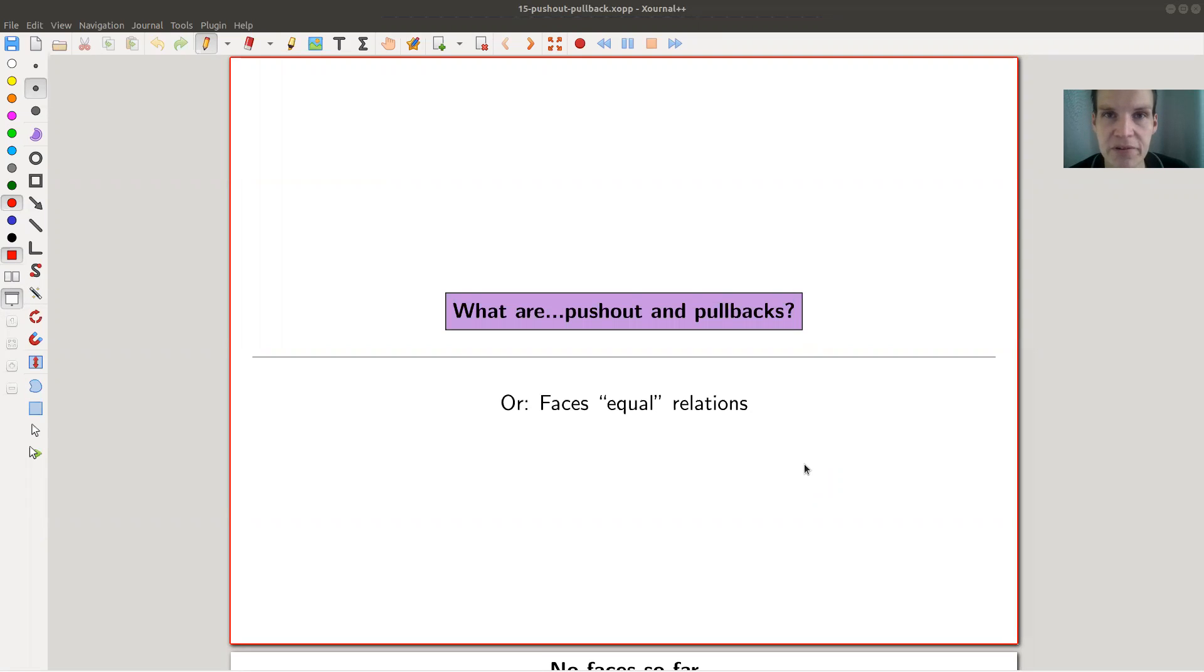Okay, welcome everyone to my continuation of what is category theory. Today, another instance of a limit: a pullback or pushout, a kind of gluing type thing. We'll see the first time we see faces in a universal type of relation, a diagram, and we'll see what actually happens. But let's recall what we've seen so far.